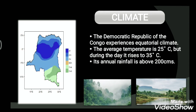The DR of the Congo experiences equatorial climate, which means it remains hot and wet throughout the year. The average temperature is around 25 degrees Celsius, but during the day it rises to 35 degrees Celsius. Most afternoons experience heavy rainfall, while mornings and nights are pleasant and cool.